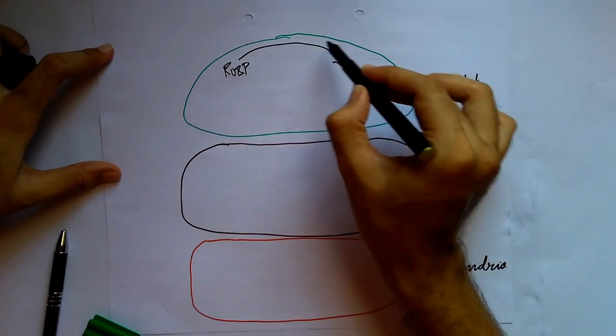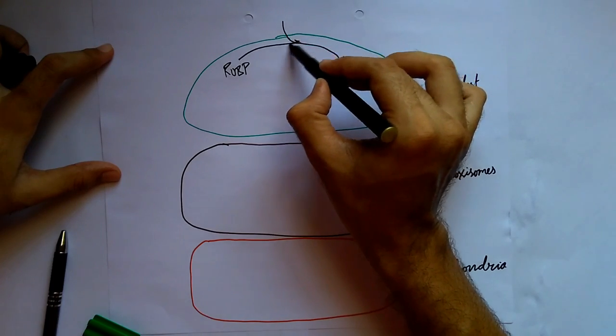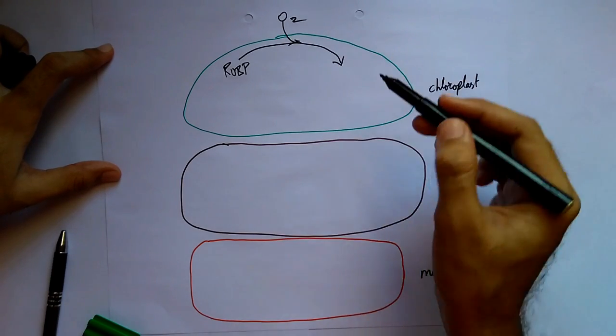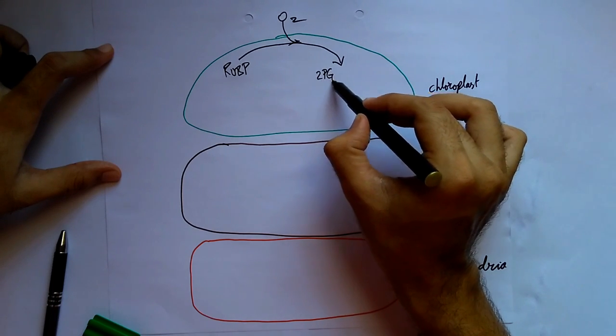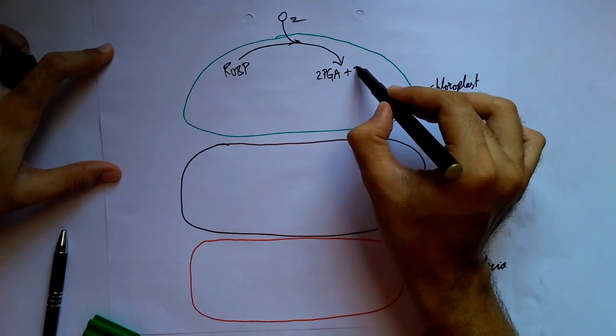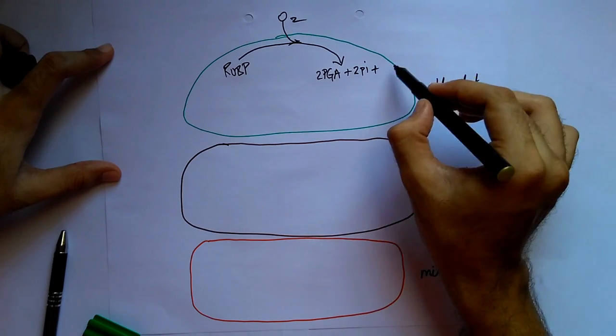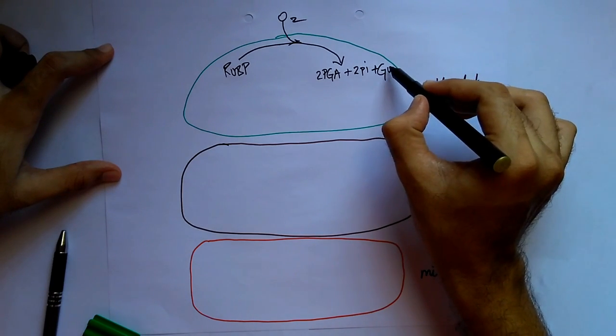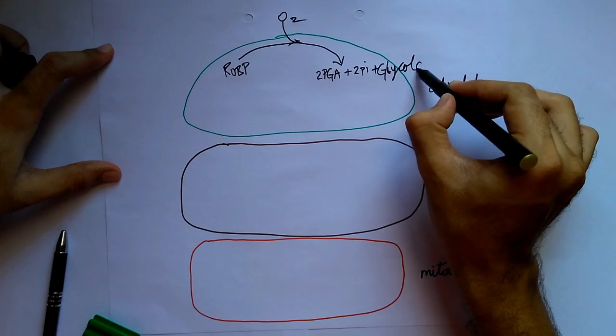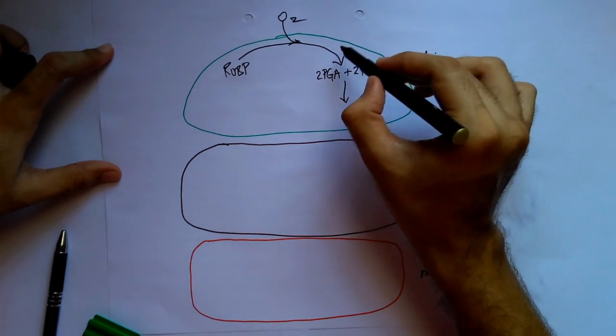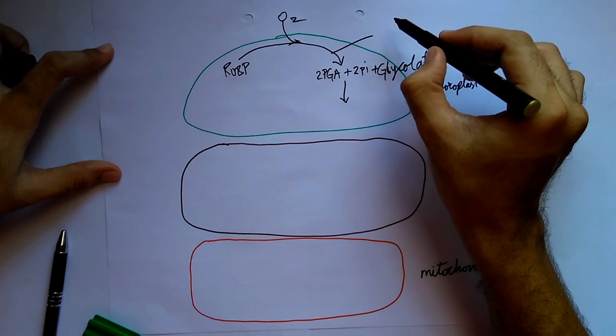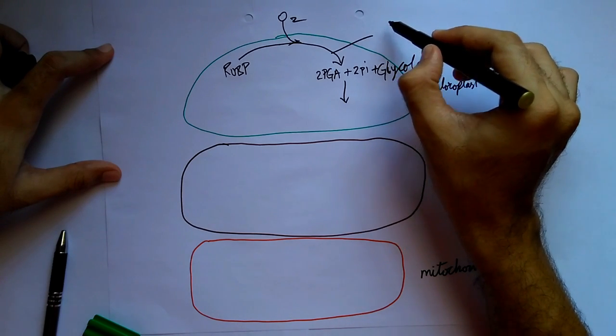Oxygen gets dissolved and it forms acid plus 2-phosphoglycolate plus glycolate. This glycolate means here the RUBP oxidation activity takes place.